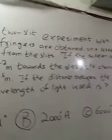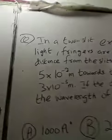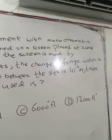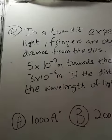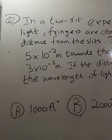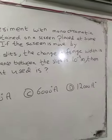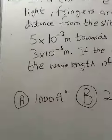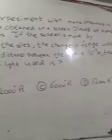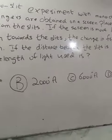In a two-slit experiment with monochromatic light, fringes are obtained on a screen placed at some distance from the slits. If the screen is moved by 5 into 10 power minus 2 meter towards the slit, the change in fringe width is 3 into 10 power minus 5 meter. The distance between the slit is 10 power minus 3 meter. Find the wavelength of light used.